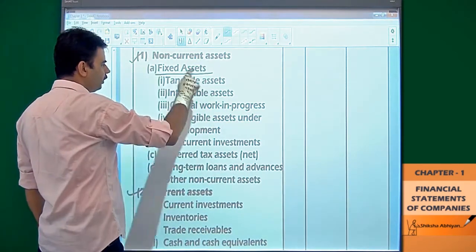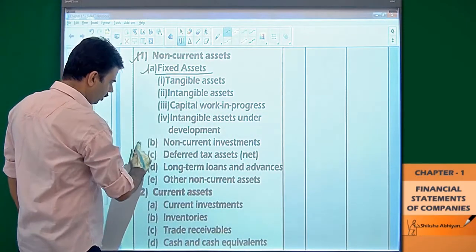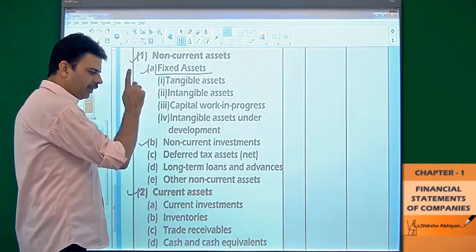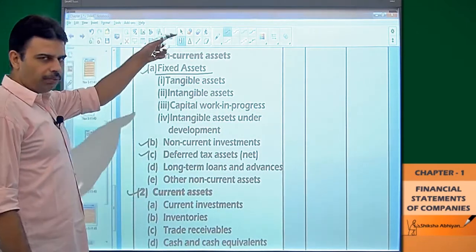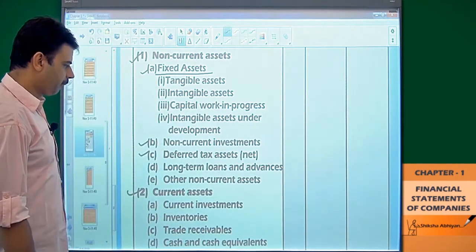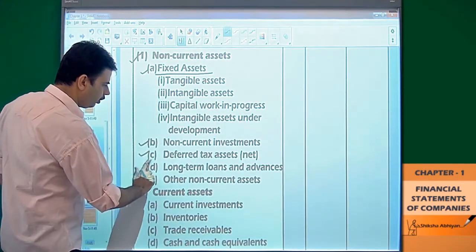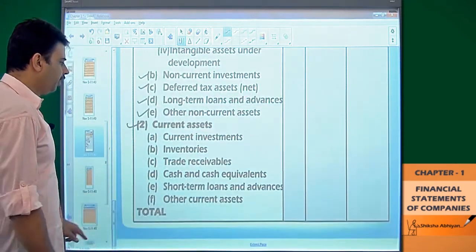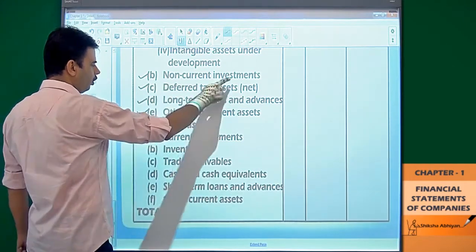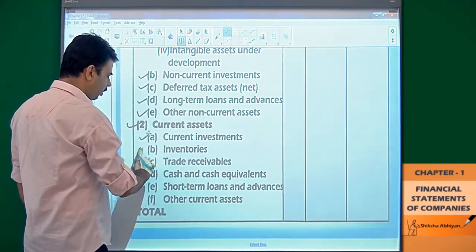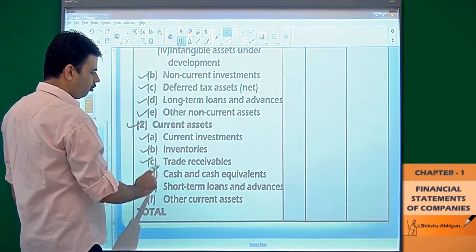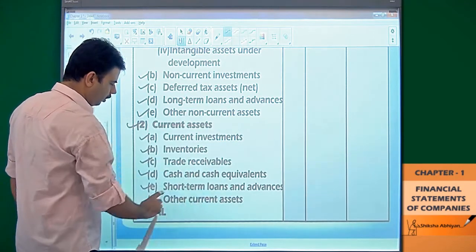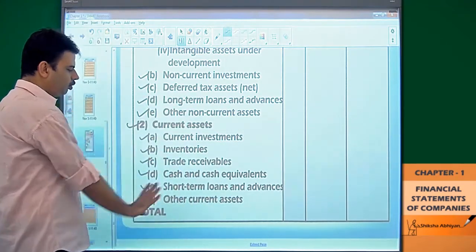Under non-current assets we also have non-current investments. As mentioned, deferred tax can be a liability or an asset — on the asset side it also falls under non-current. Then long term loans and other non-current assets. Under current assets: current investments — compare this with non-current investments. In place of deferred tax, here we have inventory, trade receivables, cash and cash equivalents, short term loans (where long term loans were under non-current), and other current assets.